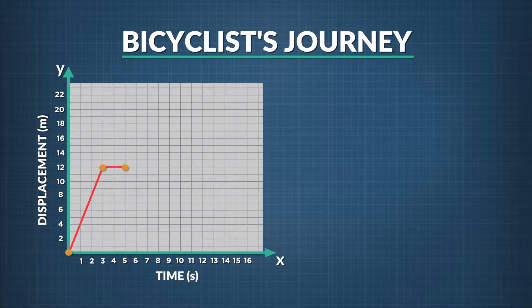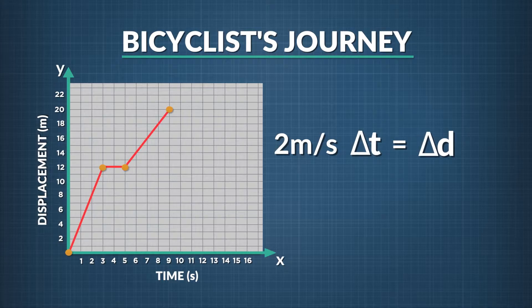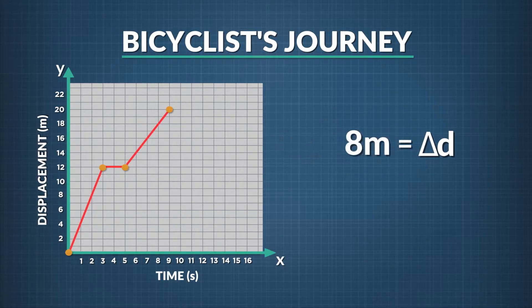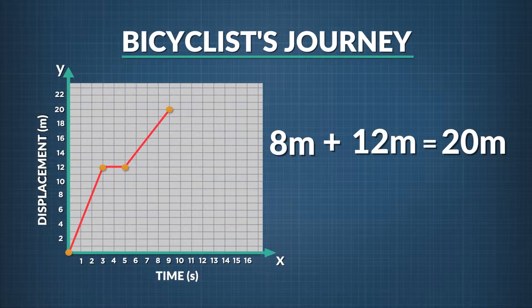From 5 to 9 seconds, our velocity of 2 meters per second means we travel 4 seconds times 2 meters per second, or 8 meters. Adding positive 8 meters to our current displacement means we end up with 20 meters from the origin after 9 seconds have passed overall.